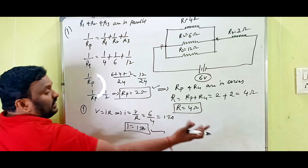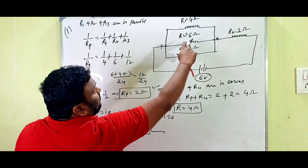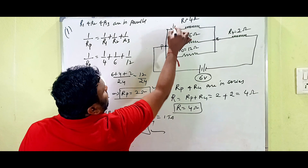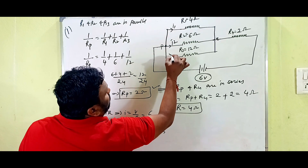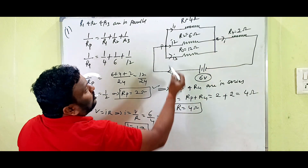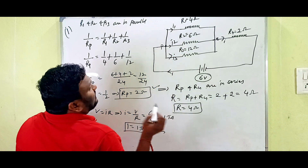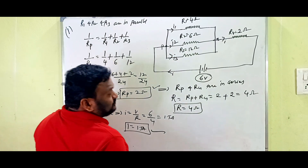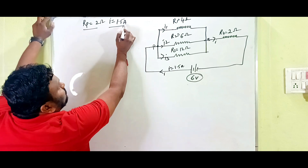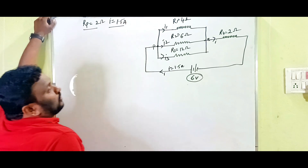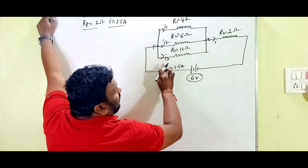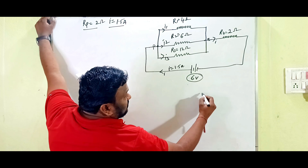Now let's find the individual currents. The total current I = 1.5 amperes splits into I1, I2, and I3 through the parallel combination, then recombines back to I. We know Rp is 2 ohms and I is 1.5 amperes. Now we find I1, I2, and I3.